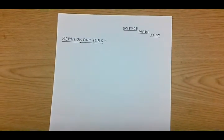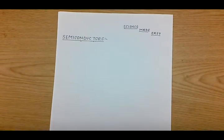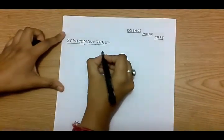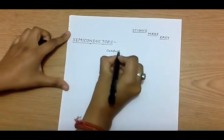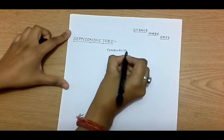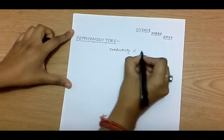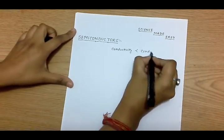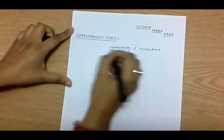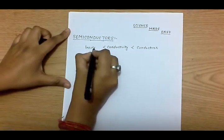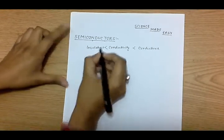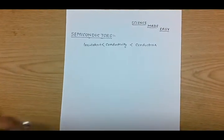Hello everyone, welcome to Science Made Easy. Today's topic is semiconductor materials. Semiconductor materials are those materials whose conductivity lies between conductors and insulators — their conductivity is less than conductors but greater than insulators.